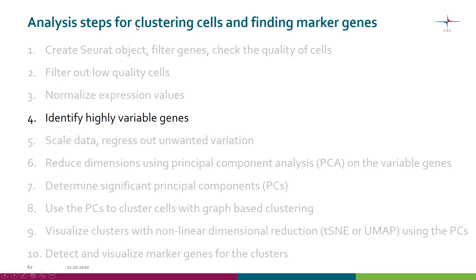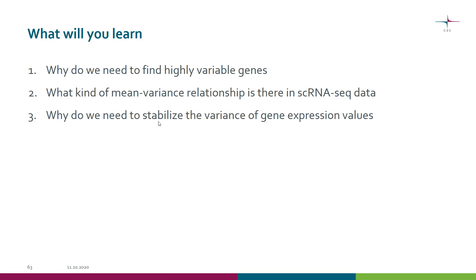The next step in our pathway for clustering cells and finding cluster marker genes is to identify highly variable genes. During this video, you will learn why we need to find the highly variable genes, what kind of mean-variance relationship there is in single cell RNA-seq data, and why we need to stabilize the variance of gene expression values.